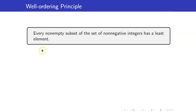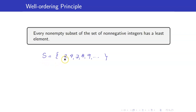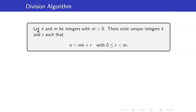For example, consider the set {2, 4, 7, 8, 9, ...}. These are all non-negative integers, and this set is non-empty, so S contains a least element. That least element is 2. For the well-ordering principle to work, the set has to be non-empty and it should only contain non-negative integers.